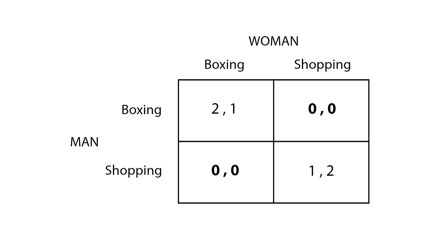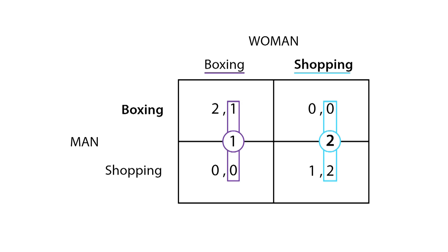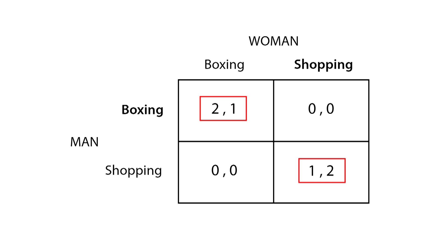In this case, knowing your opponent's strategy will not help you decide on your own course of action, and there is a chance an equilibrium may not be reached. This can be easily seen by looking for a dominant strategy equilibrium. For the man, boxing is the dominant strategy since the expected payoff is greater than for shopping. However, for the woman, shopping is the dominant strategy for the same reason. Therefore we have two Nash equilibria.